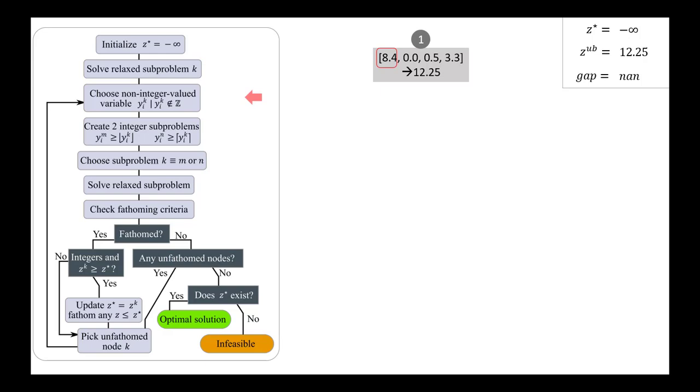And then we're going to create two integer subproblems from this. The first subproblem enforces the constraint that the first integer variable be less than or equal to 8. We're adding an additional constraint that forces the best solution to be on the integer bound on the lower end. And then we have a second subproblem that forces the integer bound to be on the upper end, greater than or equal to 9. So then we move forward by choosing a subproblem and solving it.